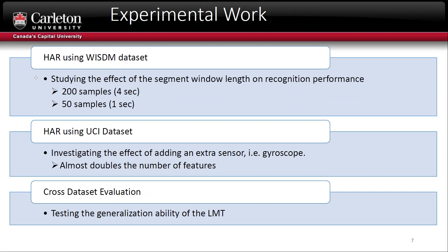To test our model, we did three different experiments using two publicly available datasets. The first experiment studied the effect of reducing the segment length to one second, starting from four seconds and reducing it to one second. The second experiment investigated the effect of feature weighting and selection capability of the logistic model tree by doubling the number of features and checking system stability. Then we did a cross-dataset evaluation to test the generalization ability of the logistic model tree.